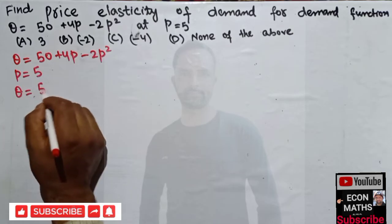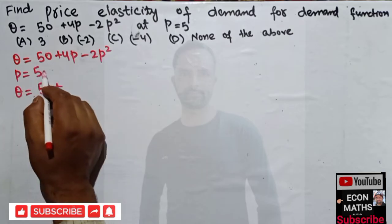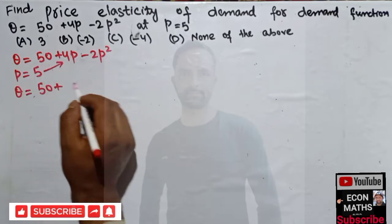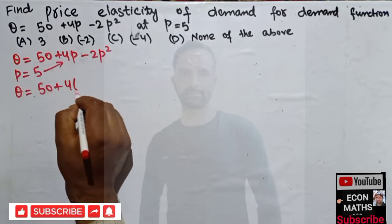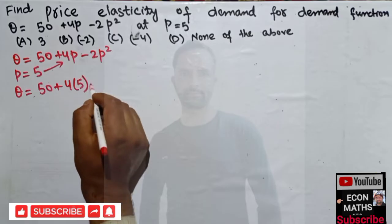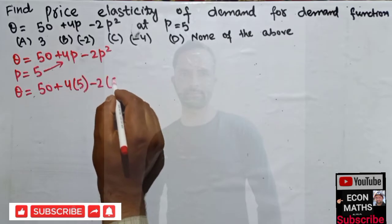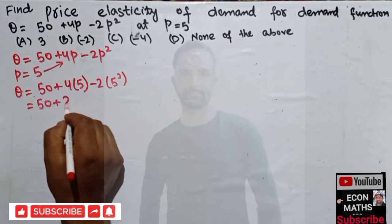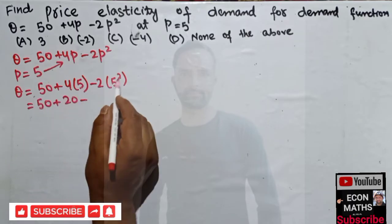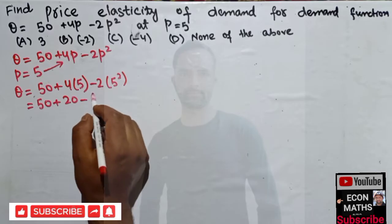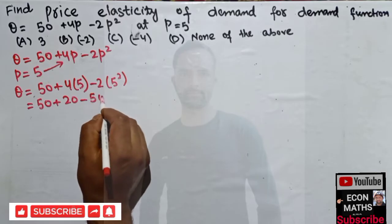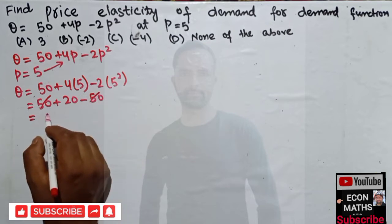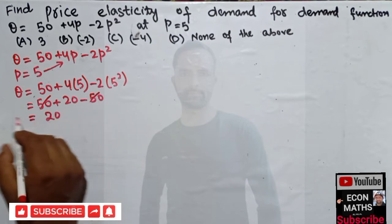q is simply 50 plus we will just plug the value of p = 5 into this demand function. So we have 4 times 5 minus 2 times 5² which comes out to be 50 + 20 - 50. This 50 and -50 gets cancelled. We get q = 20.